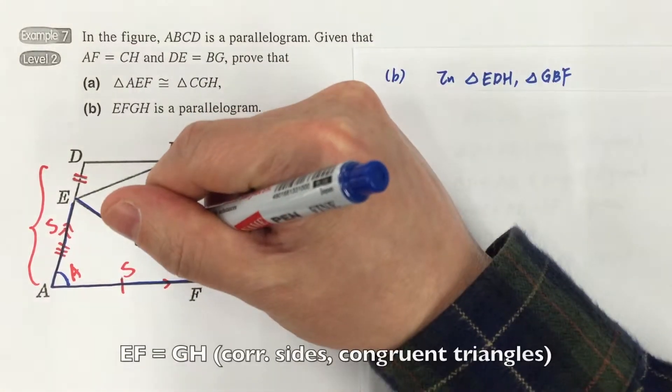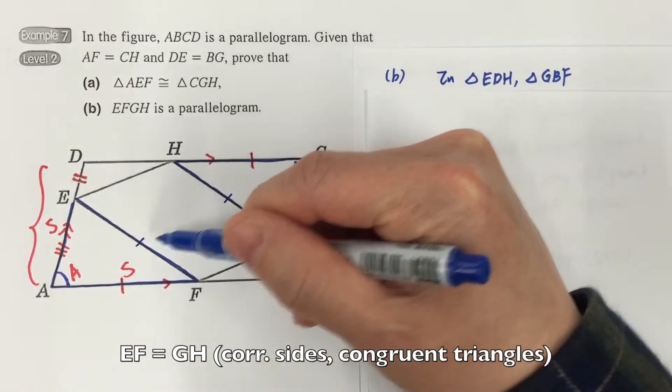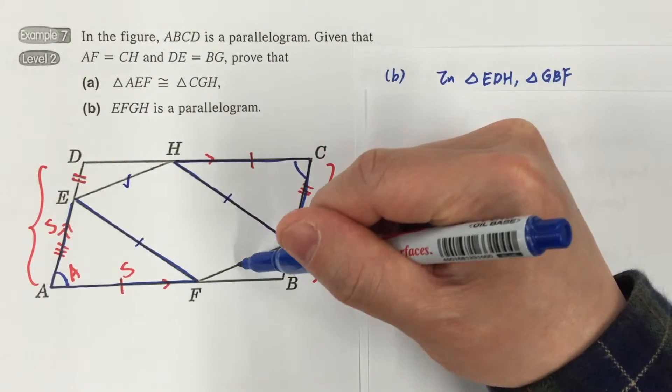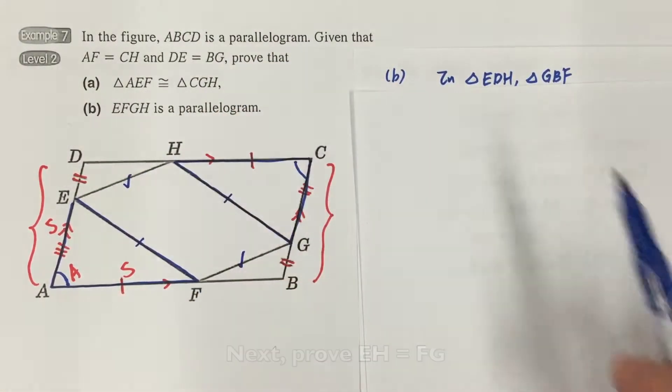Because in part A, these two blue triangles are congruent, that means we have a pair of equal opposite sides. So if we can prove that the other pair of opposite sides are also equal, then this will be a parallelogram.